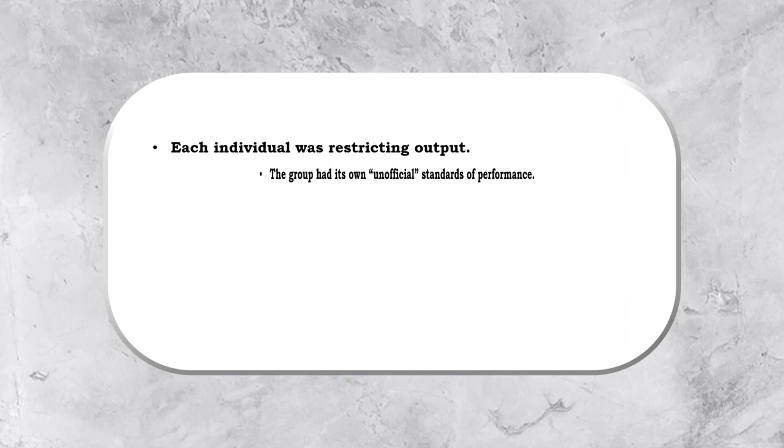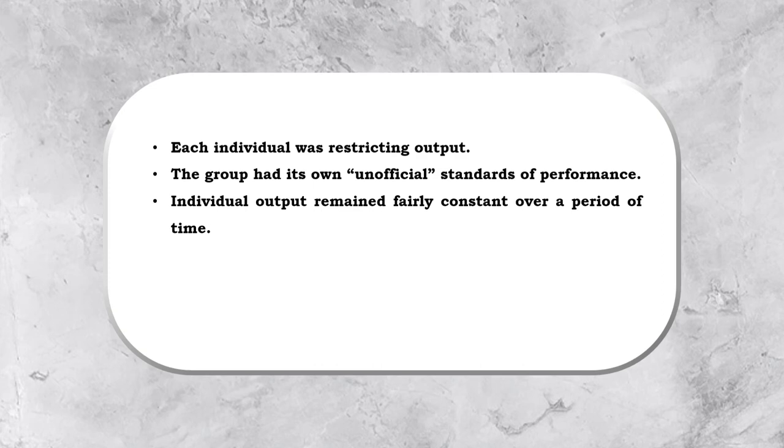The findings of this study were: each individual was restricting the output of the group. This happened because every individual's capacity to work is different and it hindered the final outcome of the group. The group had its own unofficial standards of performance. As we looked into it earlier, the management set standards were not followed by the group. Individual output remained fairly constant over a period of time. Which means to say that there was no growth or improvement seen in the performance of the individuals. Informal groups play an important role in the working of an organization. Social behavior largely affects the work culture.